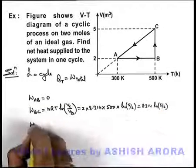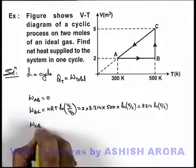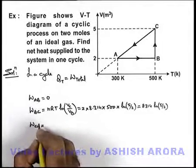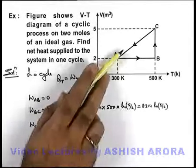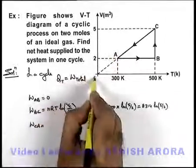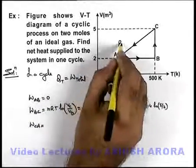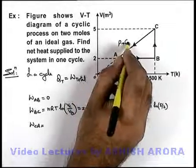Now if we find out the work done in the process C-A, you can see that the process C-A is an isobaric process, as it is passing through origin, so we can state here pressure is a constant.